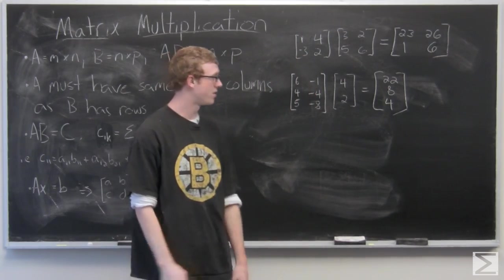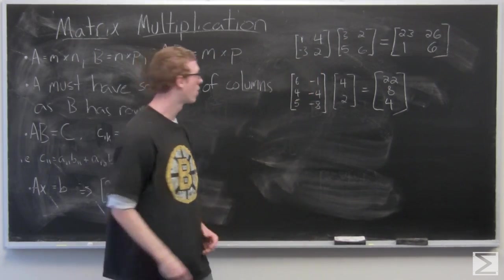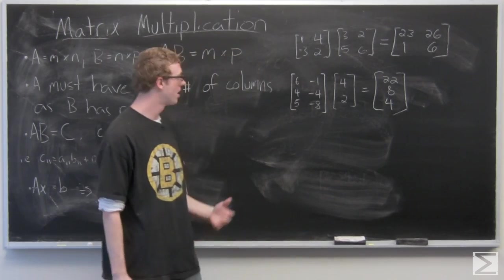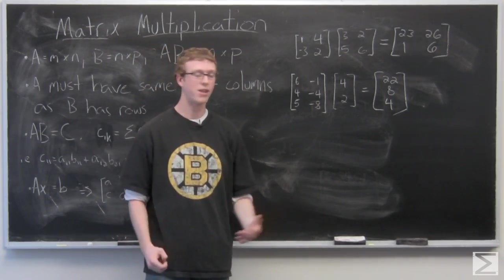So the resultant matrix is a 3x1 matrix: 22, 8, 4. Last we're going to take a look. Let's do a 2x2 and a 2x3.